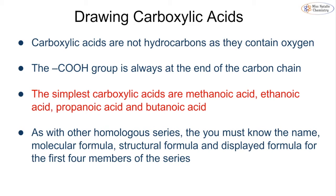When we're drawing or analyzing carboxylic acids, similar to alcohols, they are not hydrocarbons because they do contain oxygen. One major difference from alcohols is that the COOH group is always at the end of the carbon chain, meaning we cannot move that functional group throughout the chain to give us different isomers. If we have isomers of carboxylic acids, it tends to be that they've become branched.